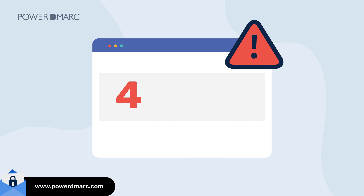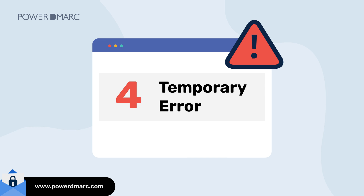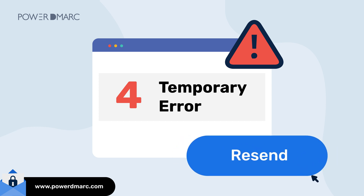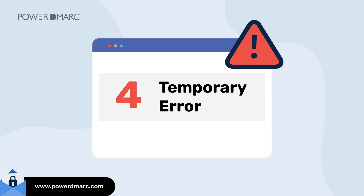If your Yahoo error code starts with 4, it is a temporary error. This is generally a harmless error with little to no reason to worry. This type of Yahoo error leads to a temporary delay in message delivery and can be triggered by spam complaints, connection issues, or server unavailability. You can simply try resending the email shortly, and that should help mitigate the error.